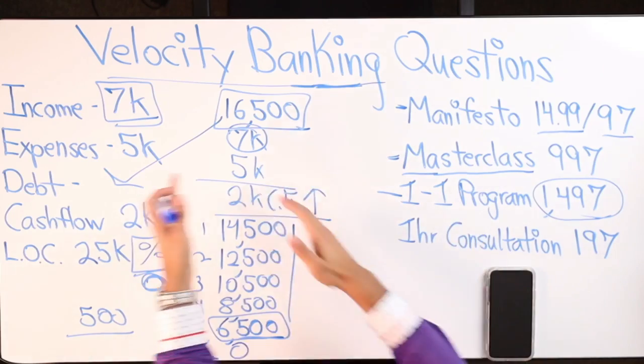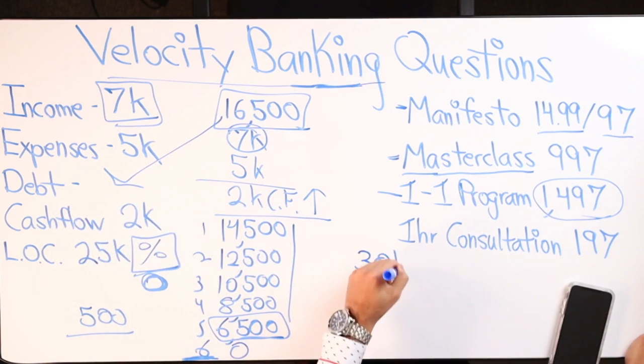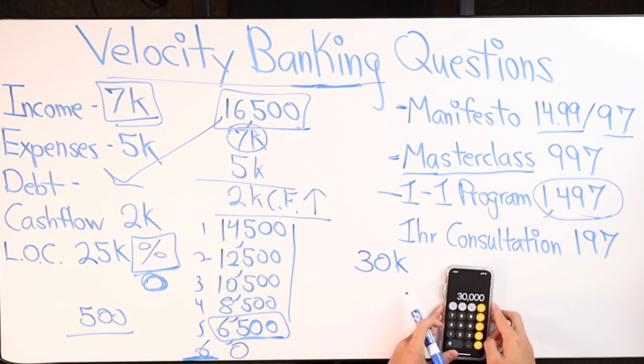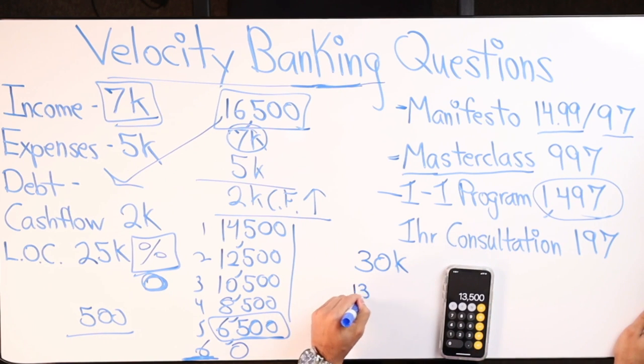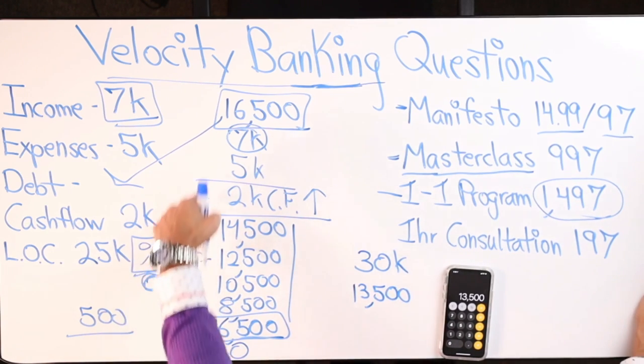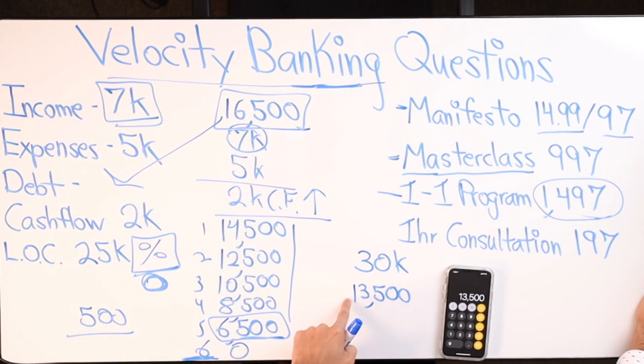So literally when you hit zero on the line of credit you can make the next chunk. Make sure we don't breach the 66 percent, though we could depending on what debt we're tackling. For example, let's say in this example you had a $30,000 vehicle. You did the first chunk: 30,000 minus 16.5, now you only owe 13.5 as of the very first month you made the chunk.